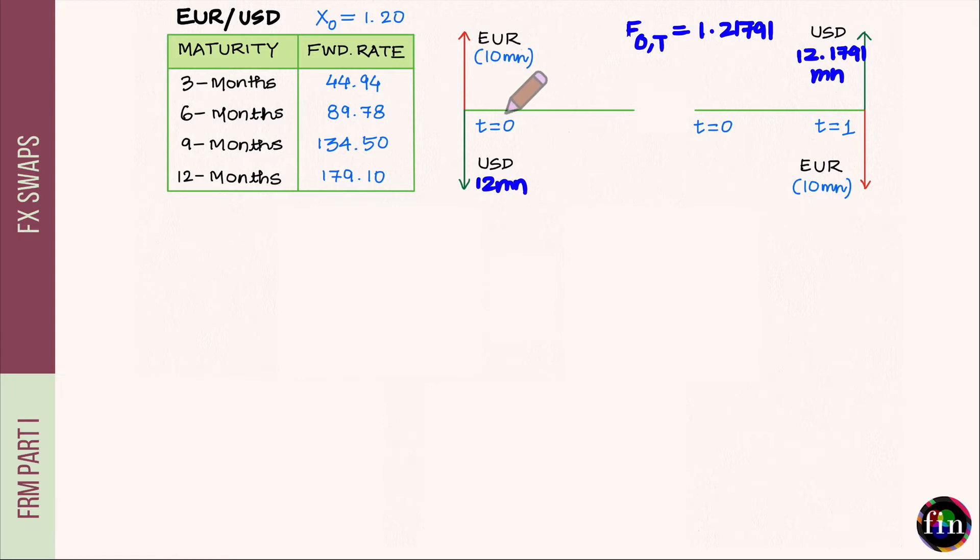This was a long spot and a short forward contract. If I combine these two contracts and treat them as a single contract, this is what I have done here. I have combined a long spot with a short forward on the same foreign currency, treating the combination as a single contract. This exactly is the cash flow diagram of an FX swap.